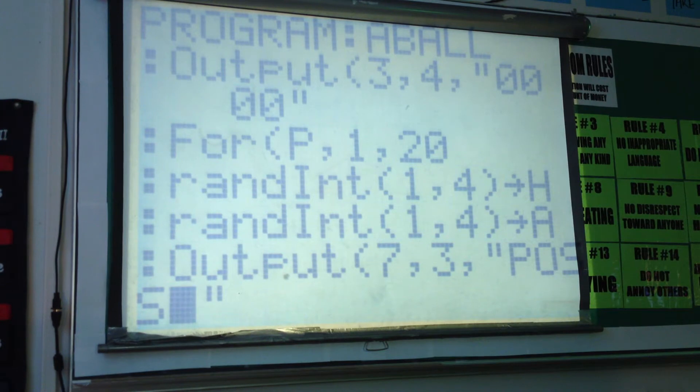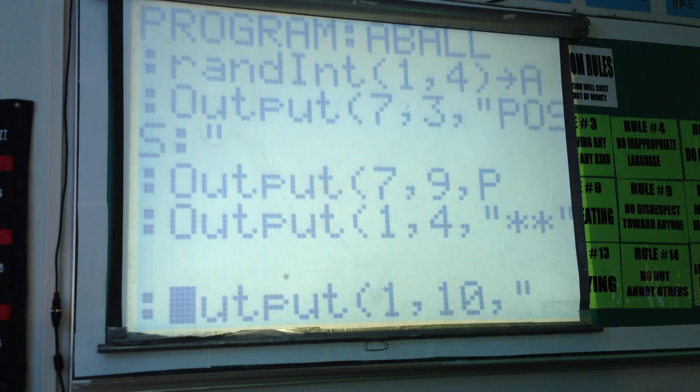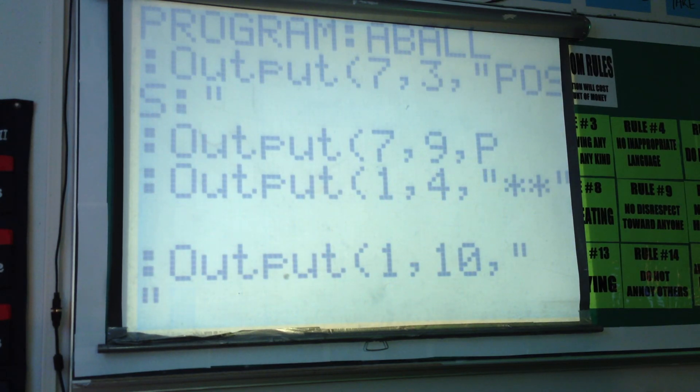Those are the outcomes, such as missed shot, turnover, two-pointer, or three-pointer. And then we output possession at the bottom and keep track of those possessions, variable P. And then we're outputting our counters here.